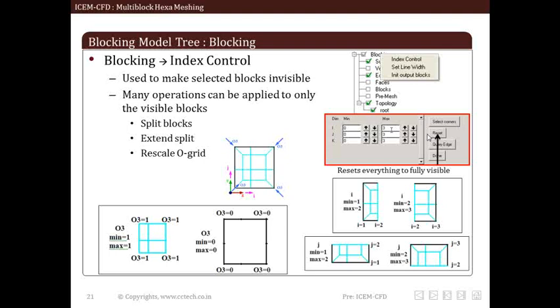The window highlighted in slide replicates this option. We can see that there are I, J, K dimensions with some numerical value and arrows provided. Now these I, J, K dimensions represent directions of block in X, Y, Z direction respectively. By clicking on arrow, we can either increase or decrease number of blocks in desired direction.